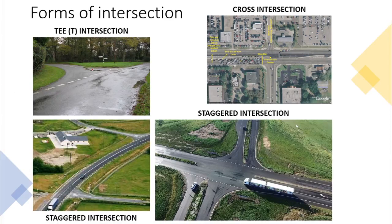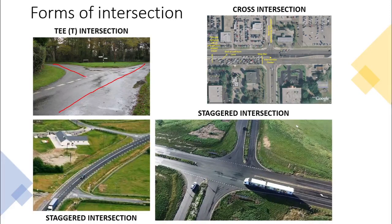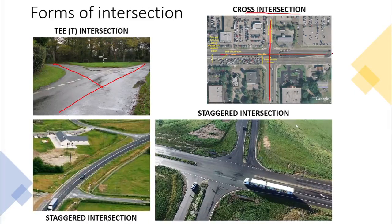Photo number one, top left, shows a typical T intersection. You have one road here and a second road here, and they form a T shape — so that is a T intersection. Top right is a cross intersection where two roads cross each other at 90 degrees.